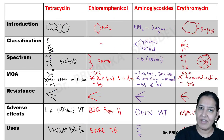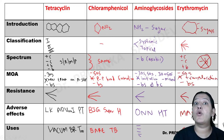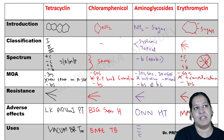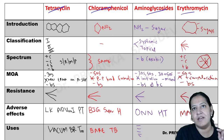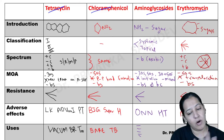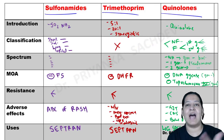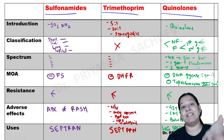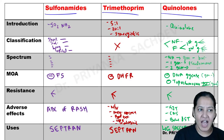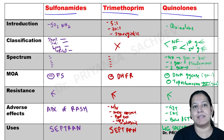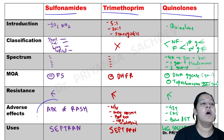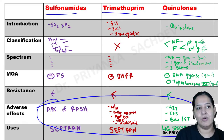We have also completed the drugs which inhibit protein synthesis: tetracycline, chloramphenicol, aminoglycoside, and erythromycin. For all these drugs, I asked you to make comparative tables with numerous mnemonics for adverse effects and uses.